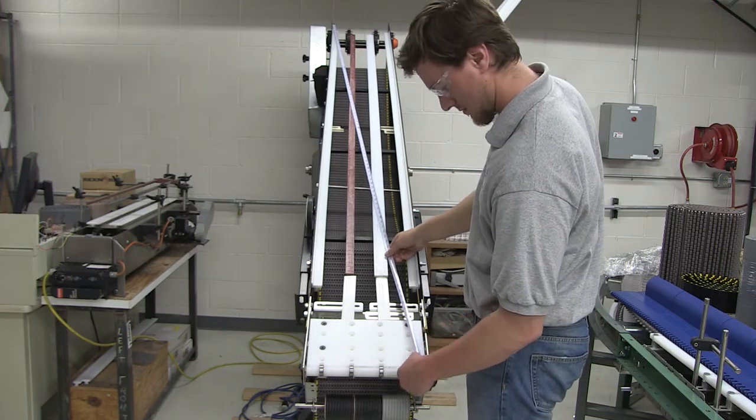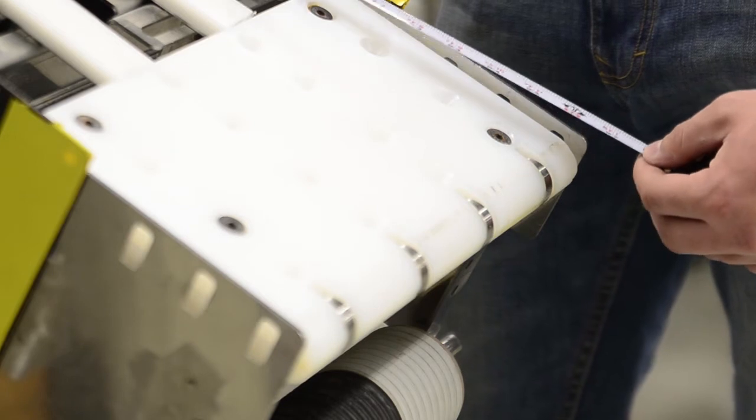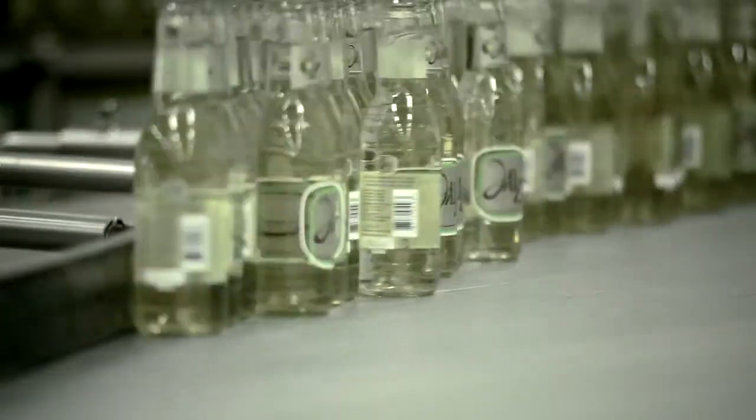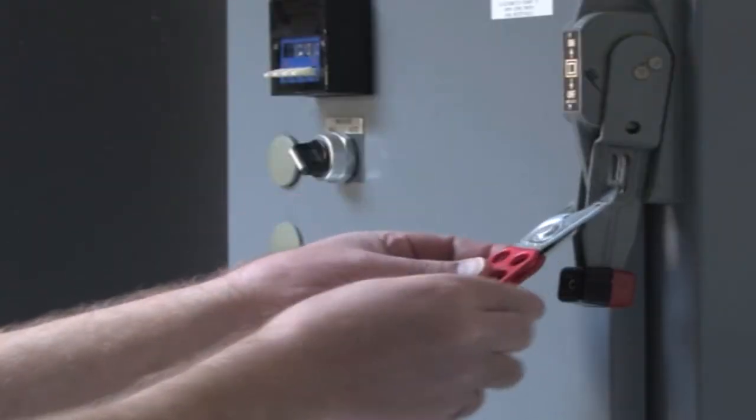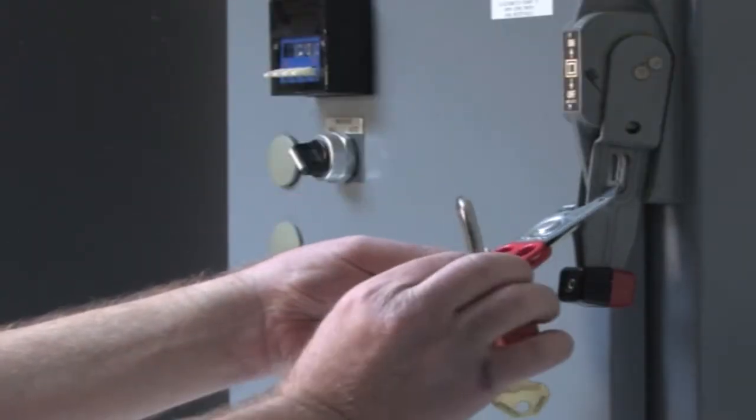There are many instances when you will want to measure your conveyor's squareness. If you are working on a chain that is currently installed in your application, always follow your lockout-tagout procedures before approaching the chain.